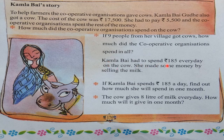Kamla Bai had to spend Rs. 185 every day on the cow. She made some money by selling the milk. If Kamla Bai spends Rs. 185 a day, find out how much she will spend in one month — that is 185 × 30. In one month there are 30 days, so that much amount Kamla Bai has to spend on 1 cow to feed it.